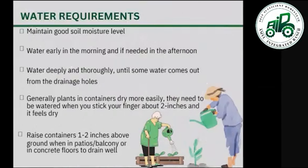For water requirements, maintain a good soil moisture level. Water early in the morning and if needed in the afternoon. Water deeply and thoroughly until some water comes out from the drainage holes of a container. Plants in containers dry out more easily, so raise containers at least one to two inches above ground — whether on a balcony or concrete floor — to drain well.